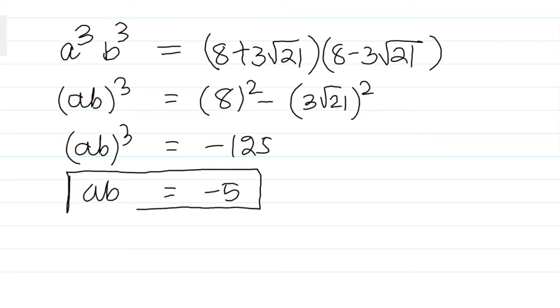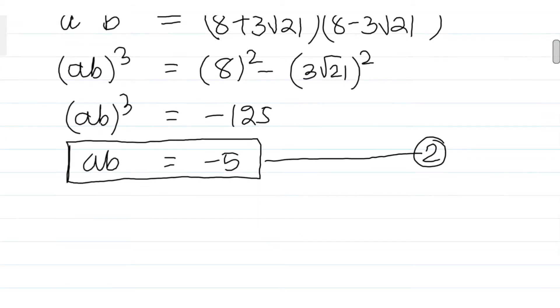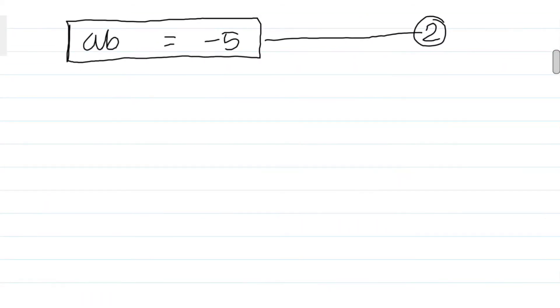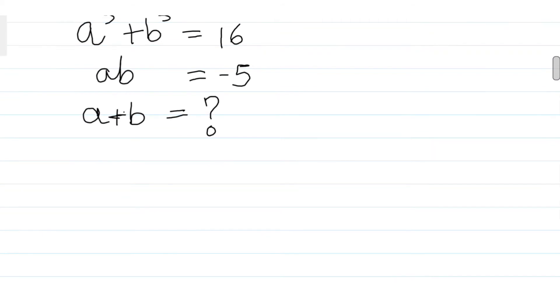Now if you notice what we got, we got simply a³ plus b³ equals 16 and ab equals minus 5. Now we want to find a plus b, so what we'll do is consider the (a+b)³ formula.